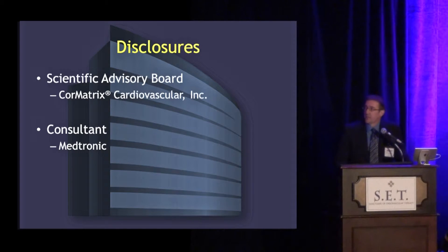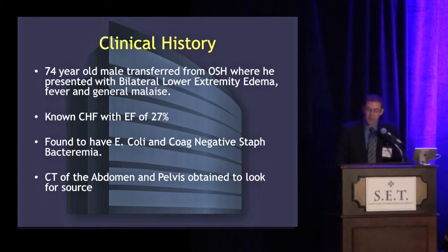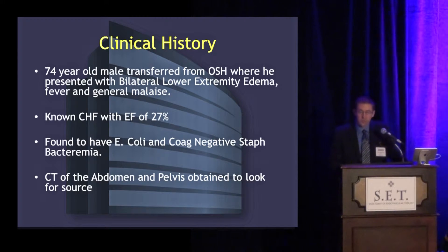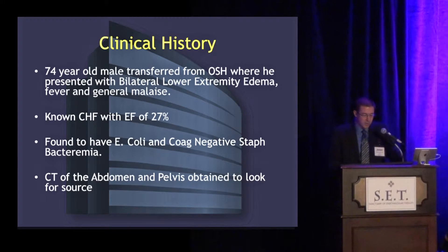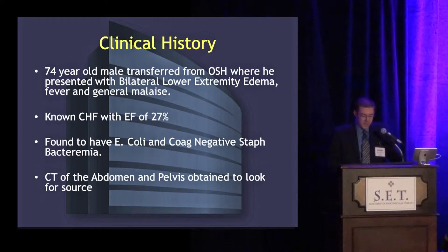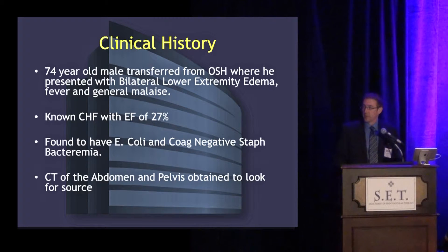This is a 74-year-old patient who was transferred from an outside hospital after he presented with lower extremity edema, fever, and general malaise. The patient was known for his history of CHF with an EF of 27%. During his admission, blood cultures were obtained and he was found to have E. coli and coag-negative staph bacteremia. A CT of the abdomen and pelvis was obtained to try to find a source.